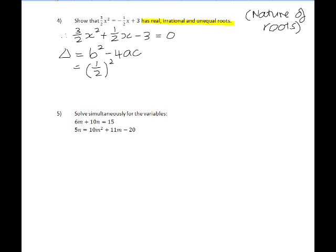So the value of b is a half, a is 3 over 2, c is negative 3, and if you calculate that, you get the value to be 73 over 4.